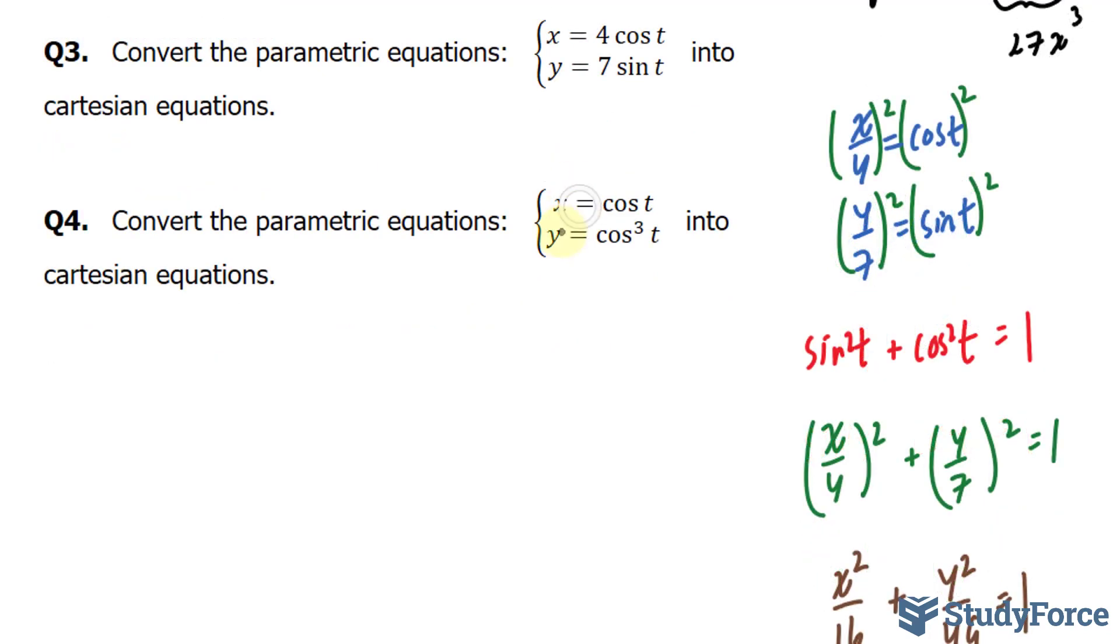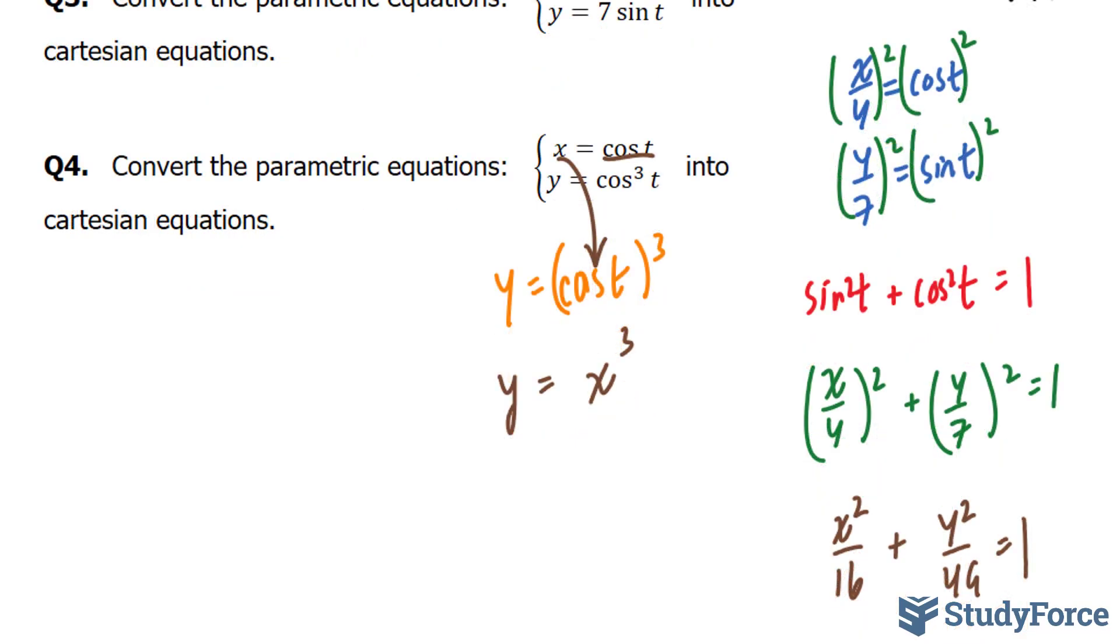Lastly, we have these two parametric equations and we need to convert this into its Cartesian equivalent. What I'll do to do this is change this into y is equal to cosine t to the power of 3. And we know that cosine t is equal to x. So all I do is place that cosine t with x and I end up with y is equal to x to the power of 3. And given the domain and range of cosine,